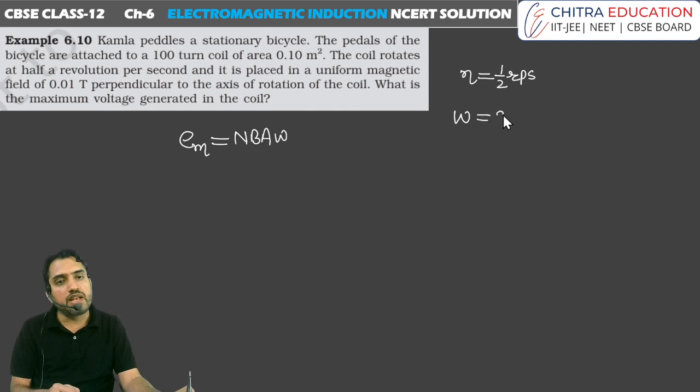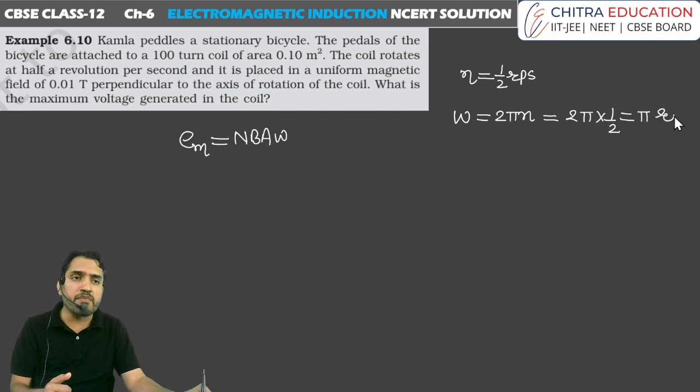So here we calculate the value of omega. It will be 2πn, where n means number of revolutions per second. So 2πn, n value here is 1 by 2. This means π radian per second.